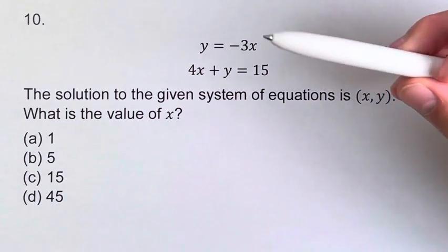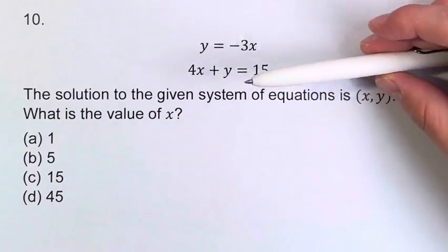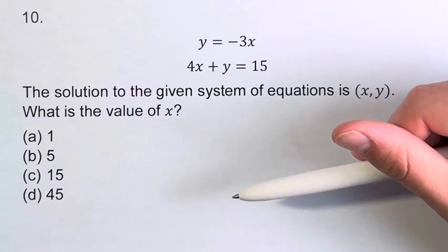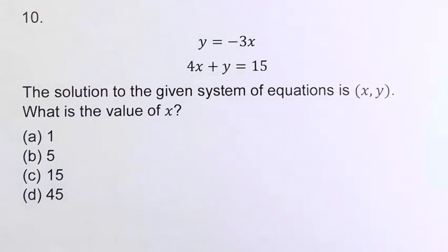Substitution is used when you have one variable in terms of another, and elimination is used when you don't have that or it's not easy to get that, so the next best way is to use elimination.